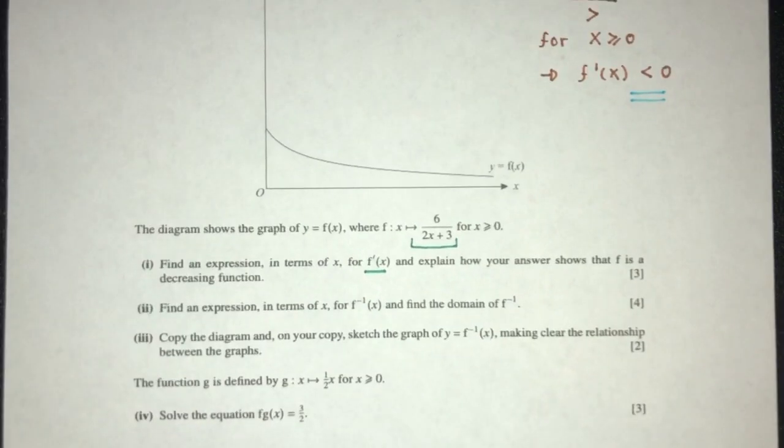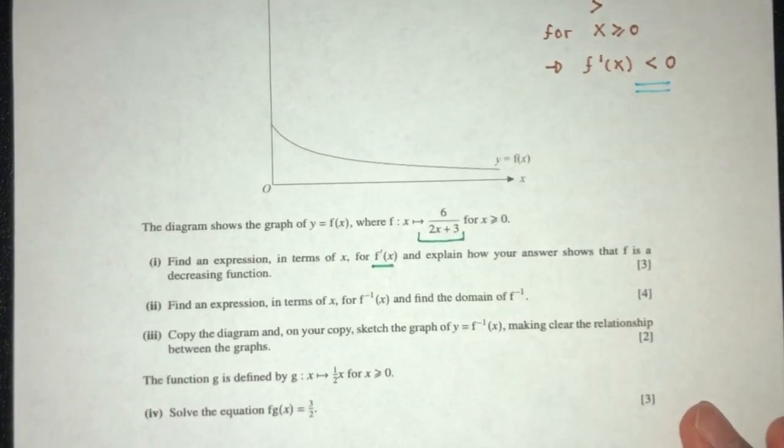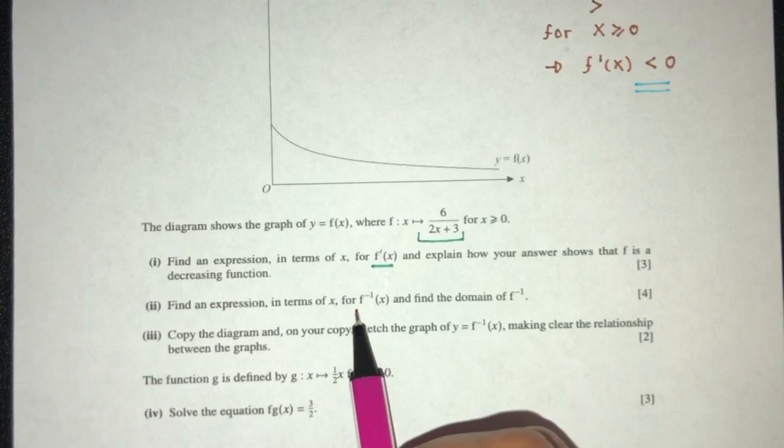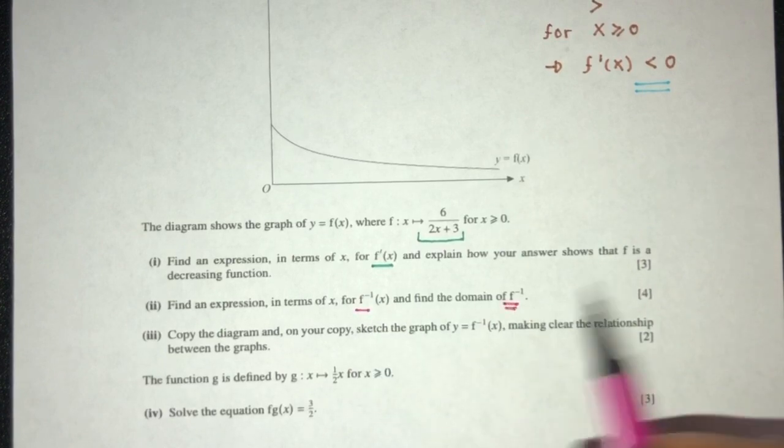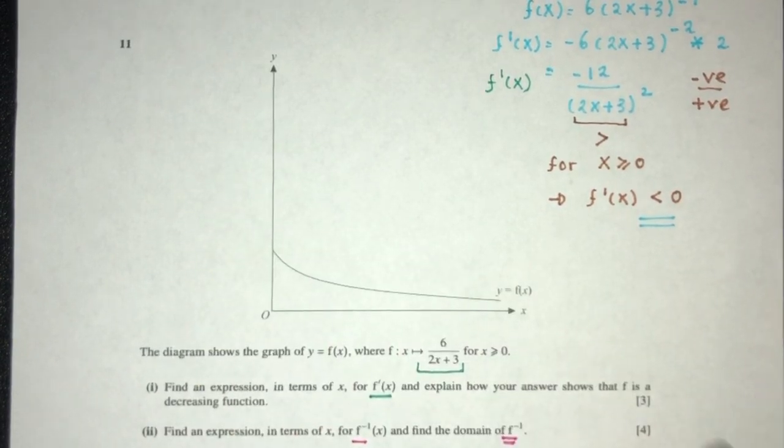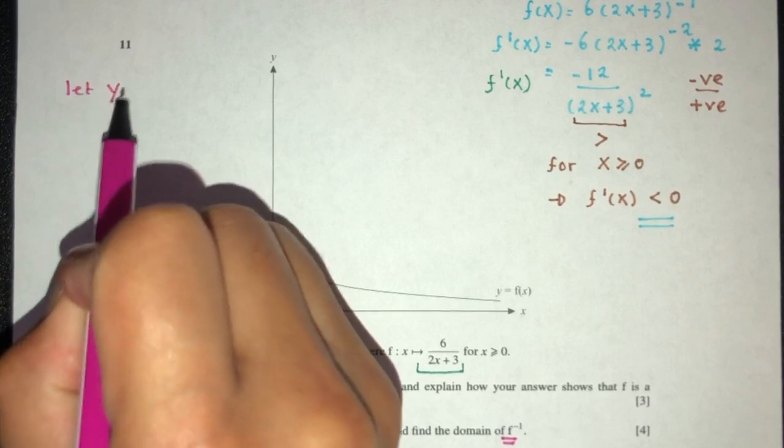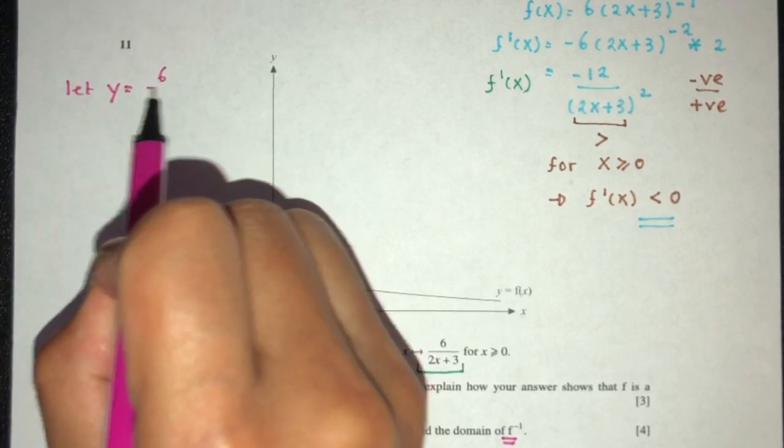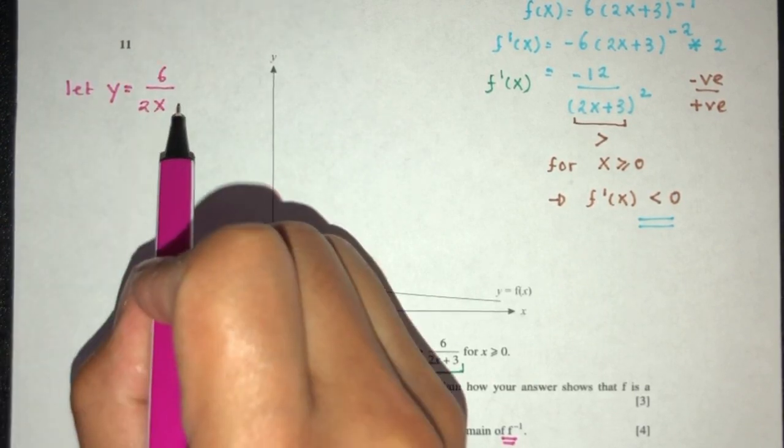Now for part 2, we have to find an expression in terms of x for f inverse of x and find the domain. Let's find f inverse of x. Step by step, let y equal f of x, which is 6 over (2x plus 3).